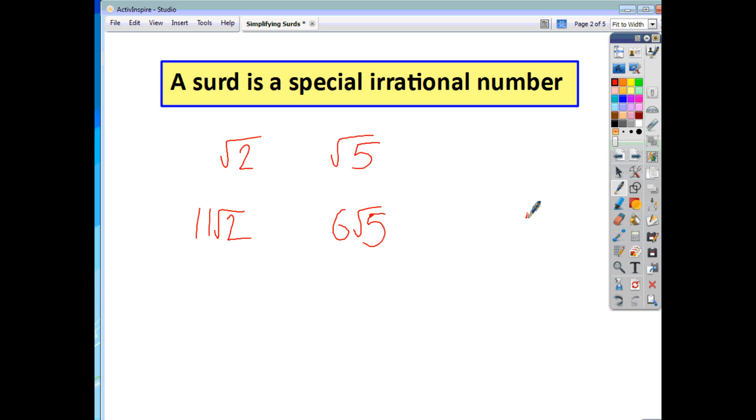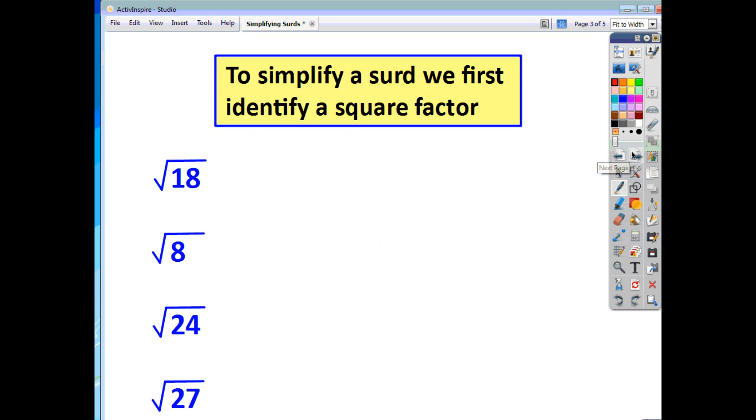Now to simplify a surd you just have to follow a very simple rule. You have to think of the number under the square root, break it down as a product and one of the numbers of that product has to be a square number.